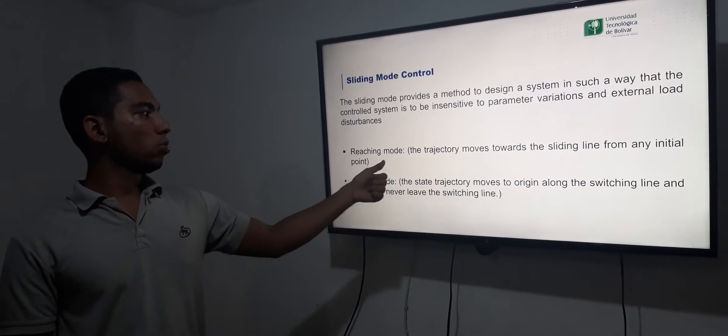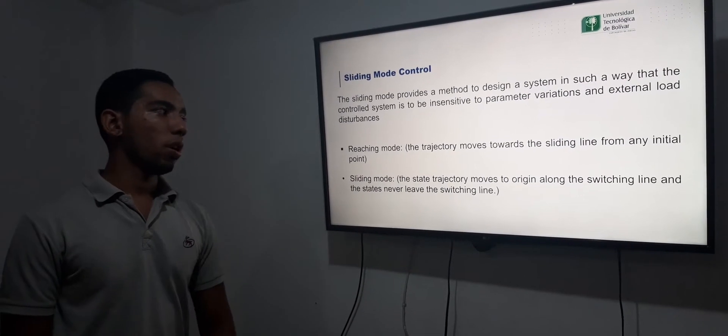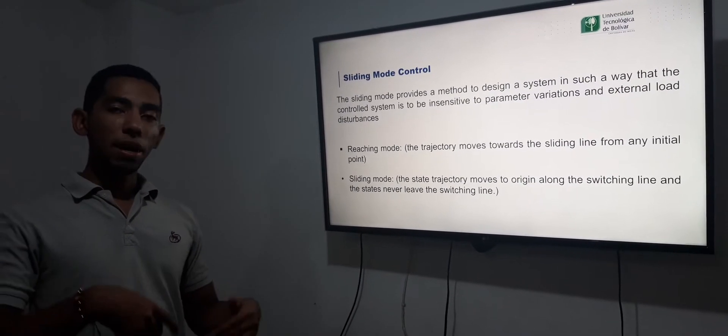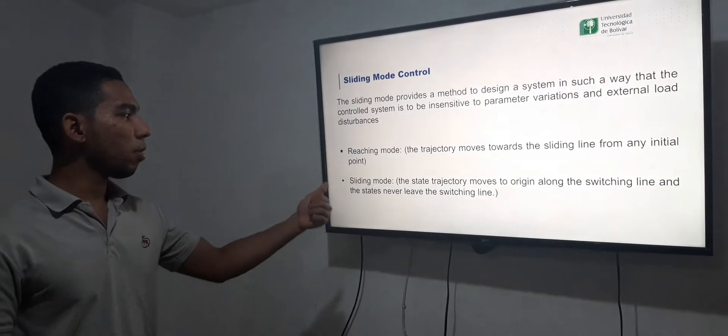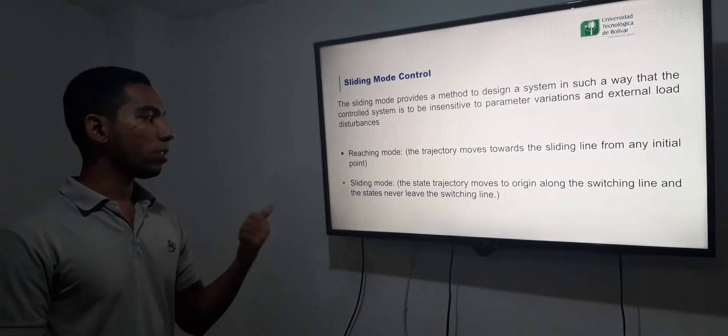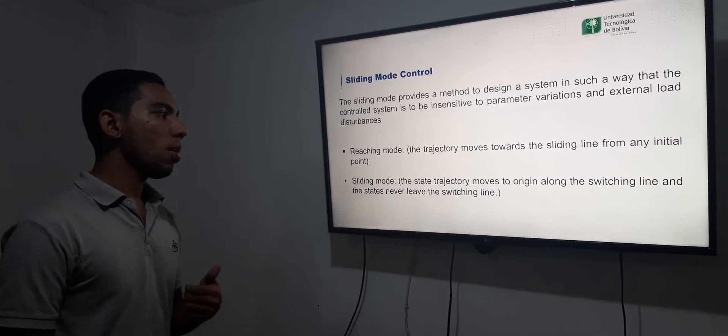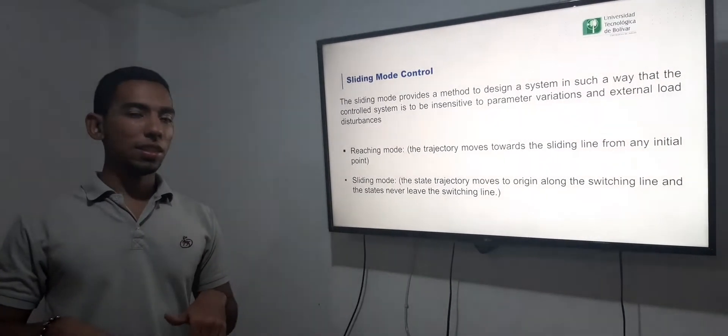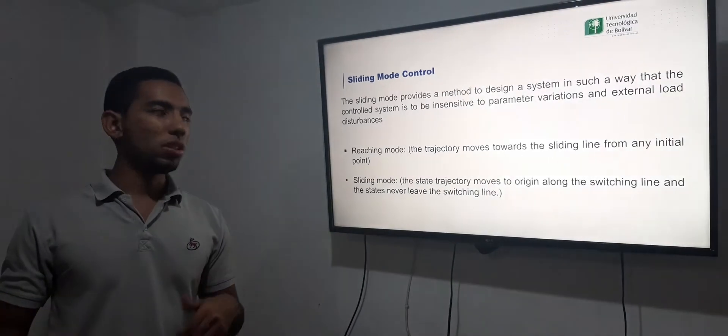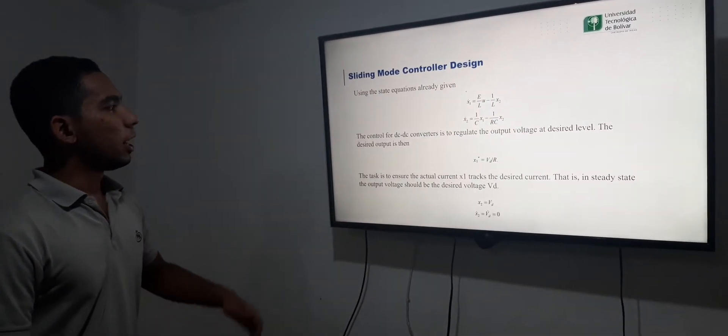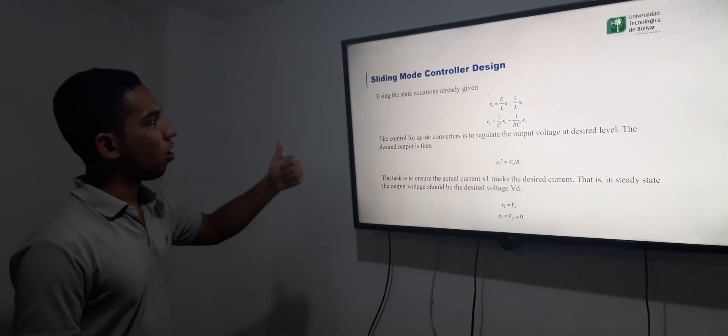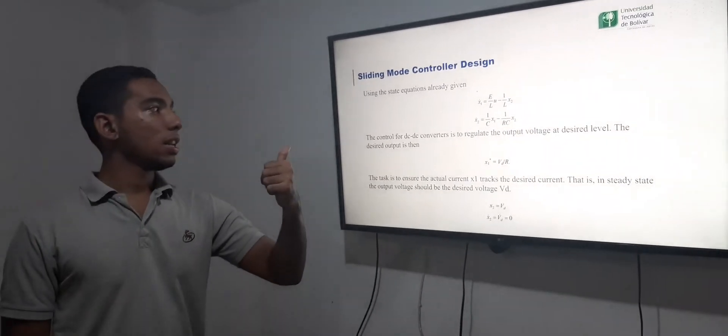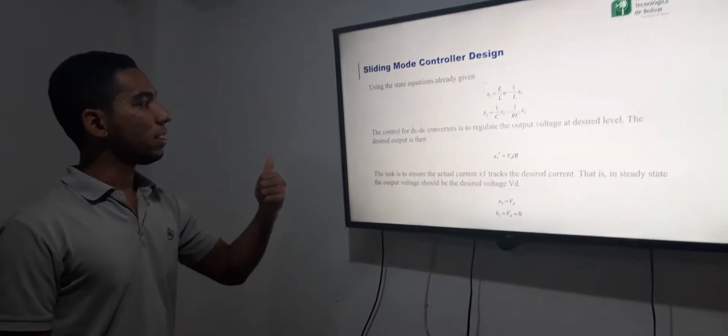The reaching mode is which the trajectory moves toward the sliding line from an initial point. And the sliding mode is which the state trajectory moves to origin along the switching line and state never leaves the switching line. And here we have all the mathematical model of the controller design.